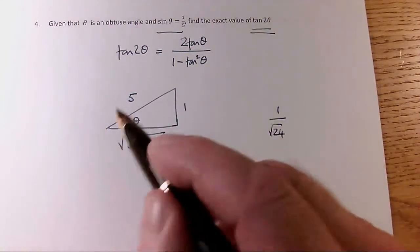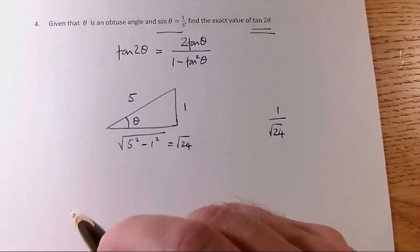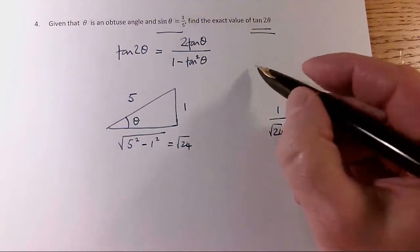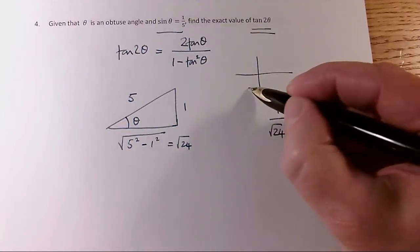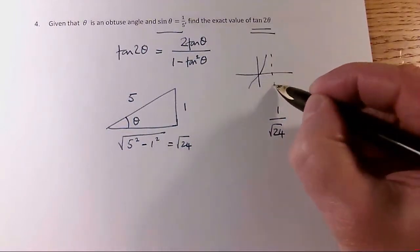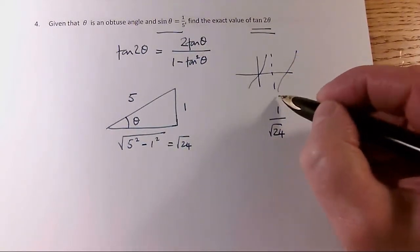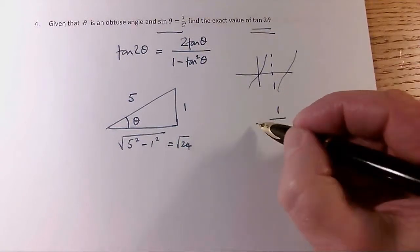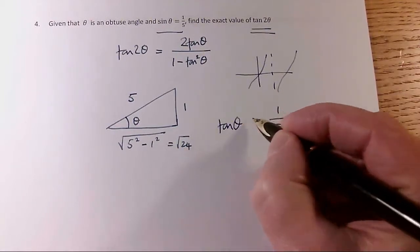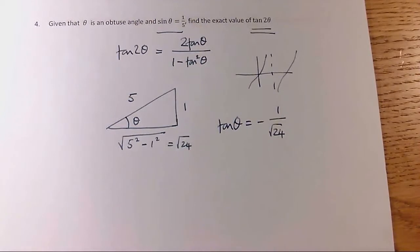But of course, this is a right angle, this is an acute angle triangle. And θ is an obtuse angle, so I need to think about how tan of an obtuse angle relates to the corresponding acute angle. I can see that tan is negative for obtuse angles, so therefore tan θ is minus 1 over √24.